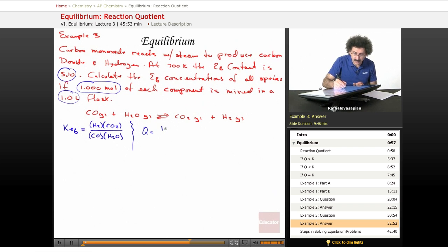Now let's calculate the Q. The Q equals, well, it's one molar of the H2, one molar of the CO2 divided by one molar of the CO, and one molar of the H2O. The Q equals one.